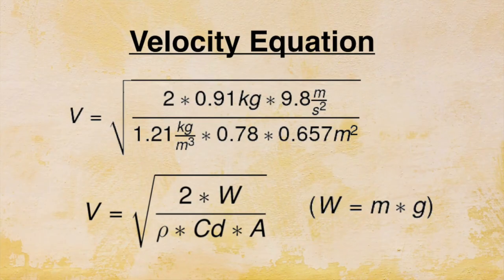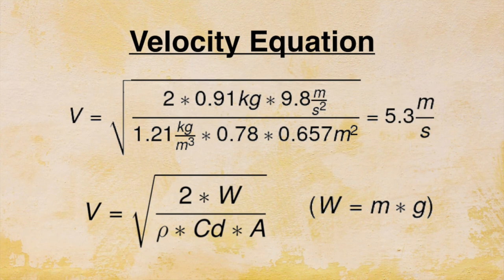If we drop in size to a slightly smaller 3-foot diameter parachute, we use mass equals 0.91 kilograms, gravity equals 9.8 meters per second squared, air density equals 1.21 kilograms per meter cubed, drag coefficient equals 0.78, and surface area equals 0.657 meters squared. We now calculate a terminal velocity of 5.3 meters per second, which is between our 5 and 6 meters per second target. As I don't know the weight of my payload yet, I will revisit this when I'm finalizing my design.